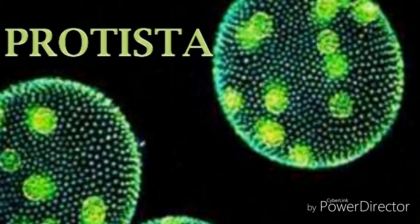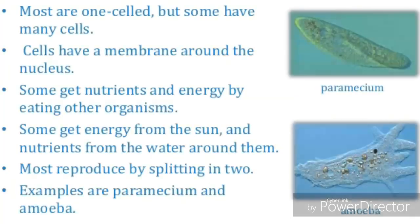In Whittaker's classification, the second kingdom is Protista. Protista represents unicellular organisms like amoeba and paramecium. The kingdom Protista consists mainly of unicellular organisms, but some forms are multicellular. These are heterotrophic organisms and they contain a nucleus with a membrane.